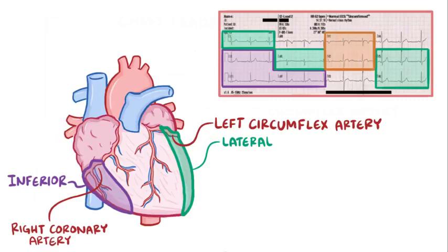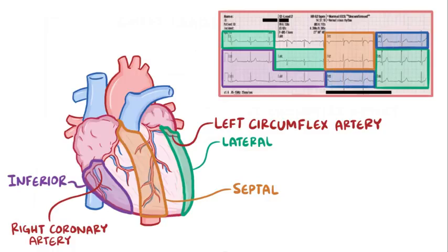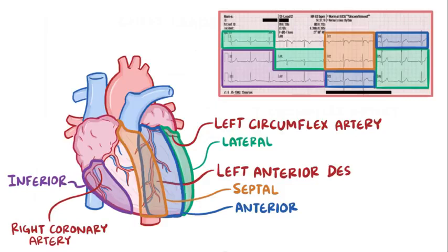Finally, V1 and V2 are considered septal leads because they're nearest to the interventricular septum, and V3 and V4 are anterior leads because they're near the anterior wall of the heart. Both of the septal and anterior regions are served by the left anterior descending artery.